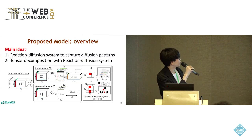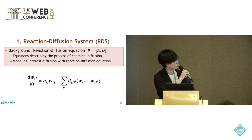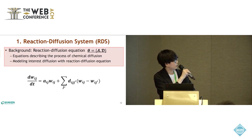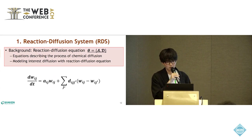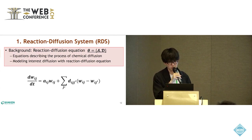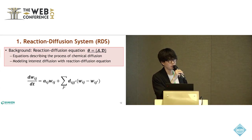Let me introduce our models. The main idea is a reaction-diffusion system to capture diffusion patterns, combined with a tensor decomposition model. The key idea is the reaction-diffusion equation, which is used to describe spatial-temporal patterns of chemicals or heat. For example, chemicals diffuse from high-concentration areas to low-concentration areas, and heat diffuses from high-temperature areas to low-temperature areas. Similarly, we assume that the strength of interest diffuses from higher areas to lower areas.